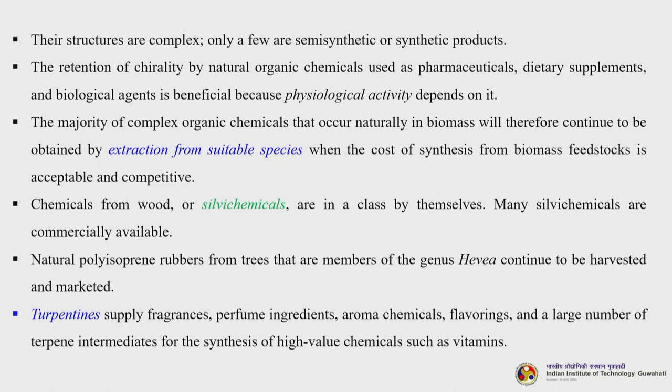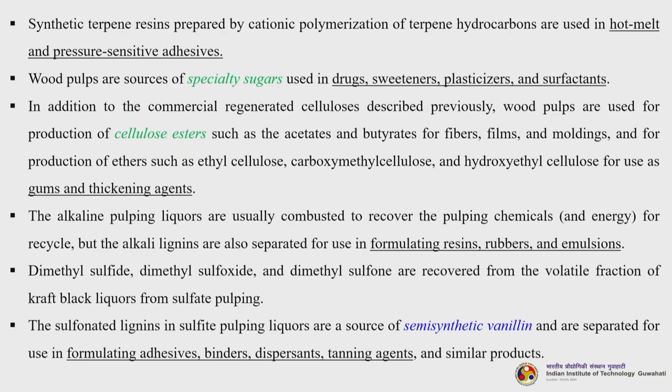Synthetic turpentine resins prepared by cationic polymerization of turpentine hydrocarbons are used in hot melt and pressure sensitive adhesives. Wood pulps are sources of specialty sugars used in drugs, sweeteners, plasticizers and surfactants. Wood pulps are also used for production of cellulose esters such as acetates and butyrate for fibres, films and moldings, and ethers such as ethyl cellulose, carboxymethyl cellulose and hydroxymethyl cellulose as gums and thickening agents. Dimethyl sulphide, dimethyl sulphoxide and dimethyl sulphone are recovered from the volatile fraction of kraft black liquors from sulphate pulping.